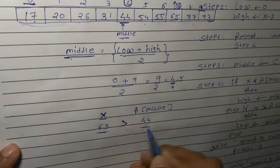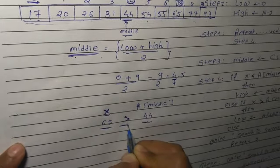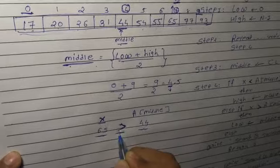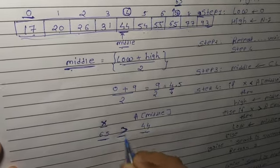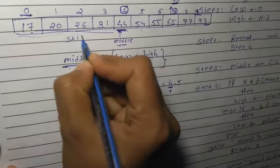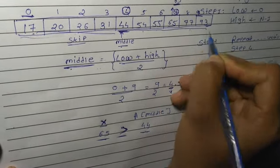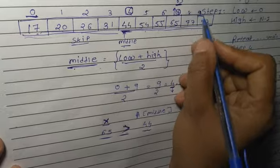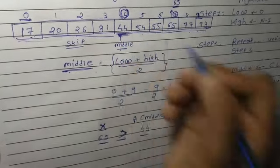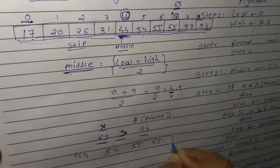Since 65 is greater than 44, what do we do? In the direction where we applied the operator, we skip the data in that direction — meaning we skip all data before the middle (the left portion). So from 44 onwards, the data that remains on the right side: we keep 44, 54, 55, 65, 77, and 93.